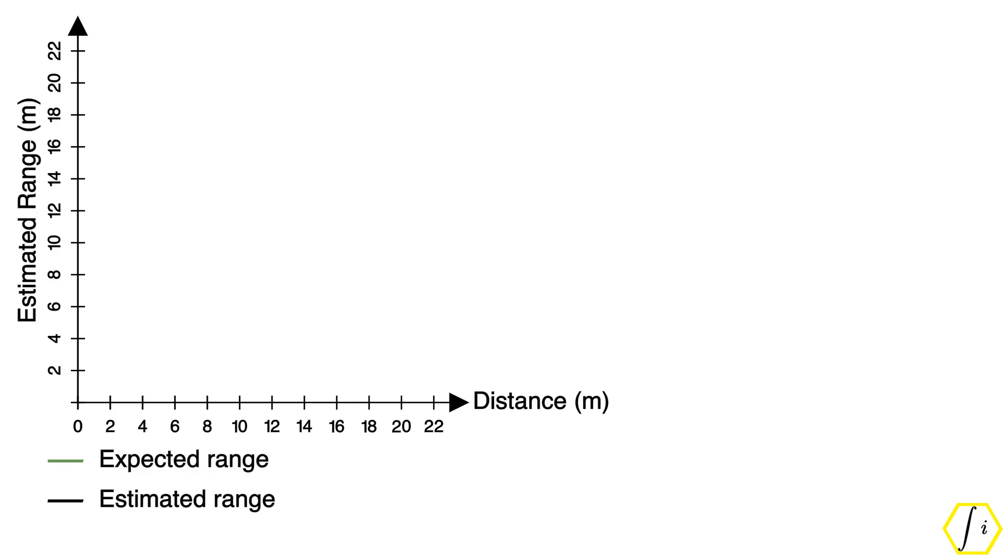Suppose that the group delay calibration is performed at a single RX gain setting corresponding to a distance of 2 meters. The estimated range plot might look like this from 0 to 2 meters distance. But beyond 2 meters, the estimated range starts deviating from the actual distance because with increasing distance, the receive signal strength drops, the RX gain increases, and its group delay differs from the calibrated group delay.